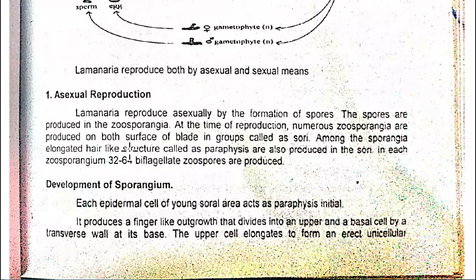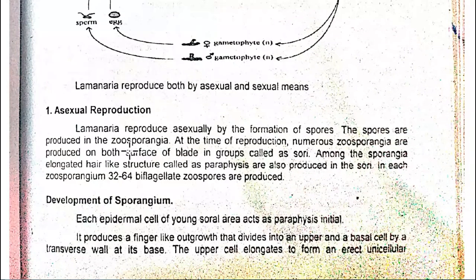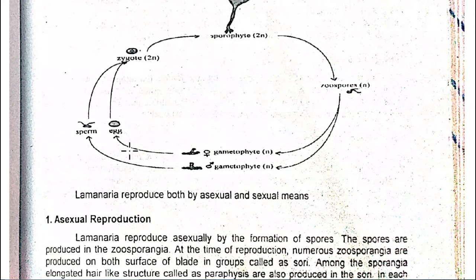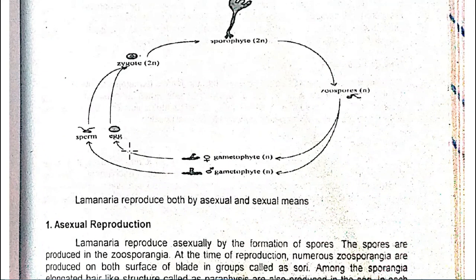Once it germinates, it becomes the gametophyte. After the gametophyte stage, sexual reproduction starts because male and female gametophytes are formed, as shown in the figure. The next topic will cover sexual reproduction in Laminaria. I hope the next lecture will be very easy and simple. Allah Hafiz, take care of yourself.